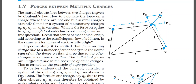F1 denotes the net force on Q1. F12 and F13 are placed tail to tail and the dotted line is completed in a parallelogram. The resultant vector obtained is F1 — the net force on Q1 — by the parallelogram law of vector addition. Given Q1, Q2, R12, R13, we can calculate F12 and F13, and then apply the parallelogram law to find F1.